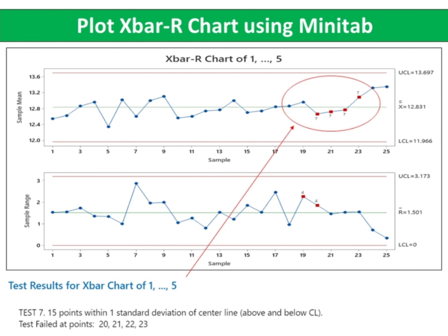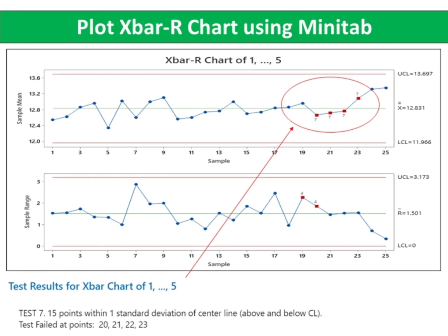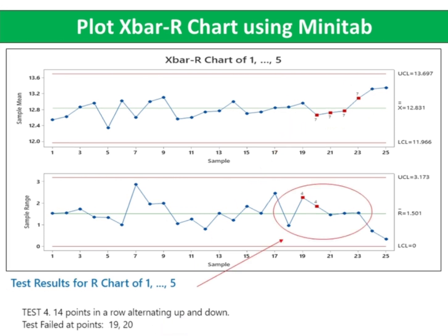In summary, the X-bar R chart shows out of control. The process failed Test 7 and Test 4. Test 7 represents 15 points within one standard deviation of the center line, above and below CL. Test failed at points 20, 21, 22, and 23. Test 4 represents 14 points in a row alternating up and down. Test failed at points 19 and 20.